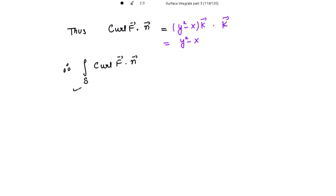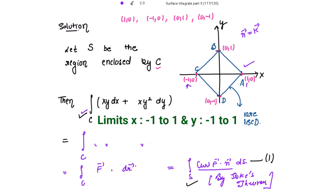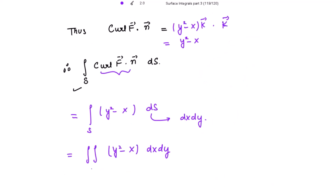Now evaluating the surface integral. The dot product of curl F with n is y² - x, and dS is dx dy. So this becomes the double integral of (y² - x) dx dy. The limits of x are from -1 to 1, and the limits of y are also from -1 to 1.